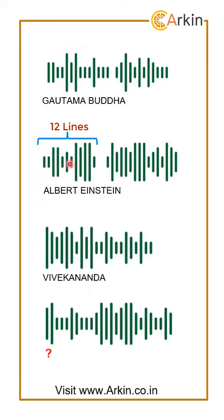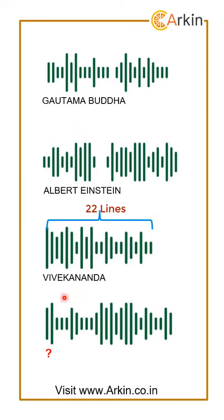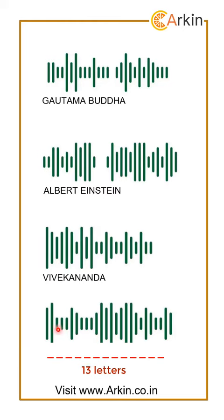Let's verify with other options: we see 12 lines and 16 lines, with 6 and 8 letters respectively — 6×2=12, 8×2=16. This holds again. Another example has 11 letters and 22 lines. So the unknown, which has 26 lines, should have 13 letters.